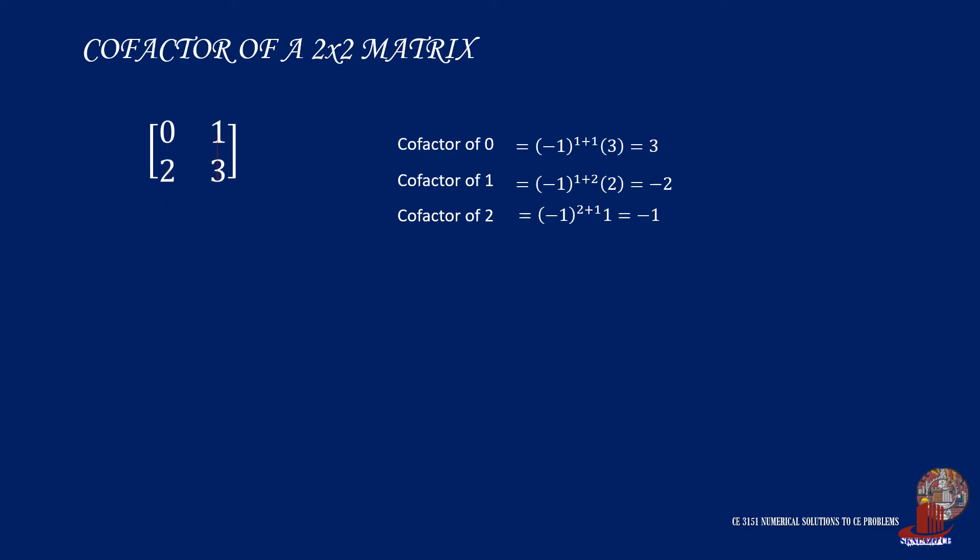To complete the cofactors of the matrix, take the cofactor of 3 by the same procedure. So negative 1 to the fourth power multiplied by 0 is 0. You can now complete the cofactor matrix as 3, negative 2, negative 1, and 0.